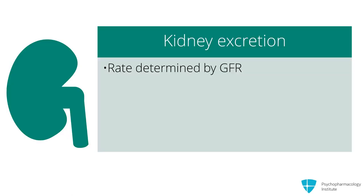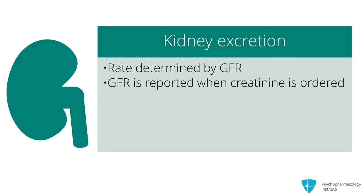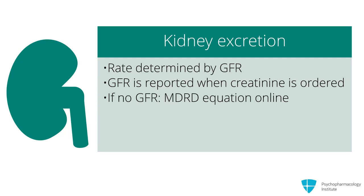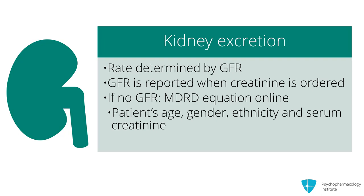Drugs and metabolites are excreted through the kidneys at a rate determined by the glomerular filtration rate. For a variety of reasons, the serum creatinine alone is not an accurate indicator of renal excreting ability. Usually the GFR is reported by the lab when the creatinine is ordered. But if it is not, there is an equation online — the MDRD equation, which stands for the Modification of Diet in Renal Disease study — that requires you to enter the patient's age, gender, ethnicity, and serum creatinine, and returns instantly the estimated GFR.